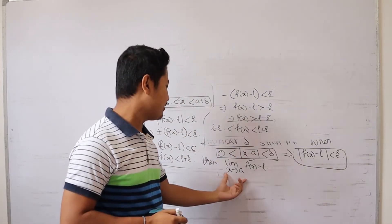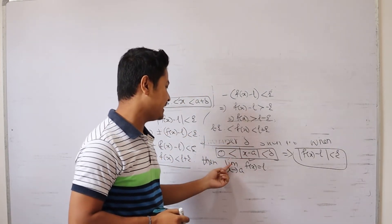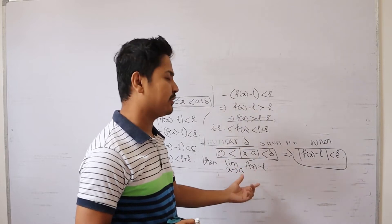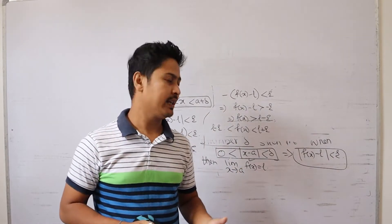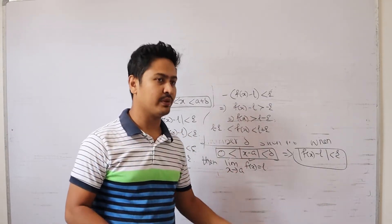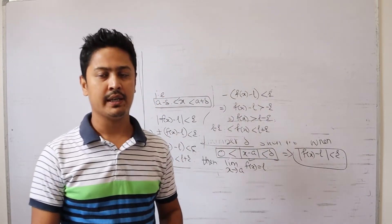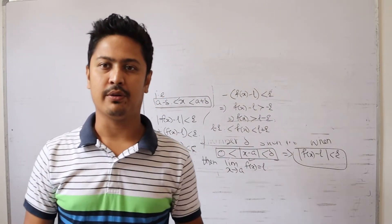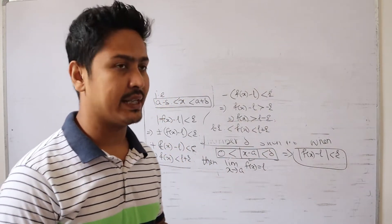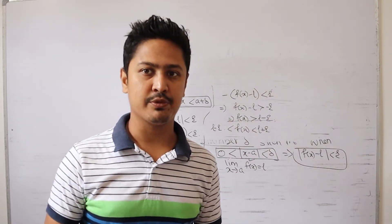This means the limit exists. That means limit x approaches to a of f of x equals l. So that means, limit x approaches to a of f of x equals l. You can learn how to do this geometrically. I have explained the definition, and now we look at the geometric interpretation.